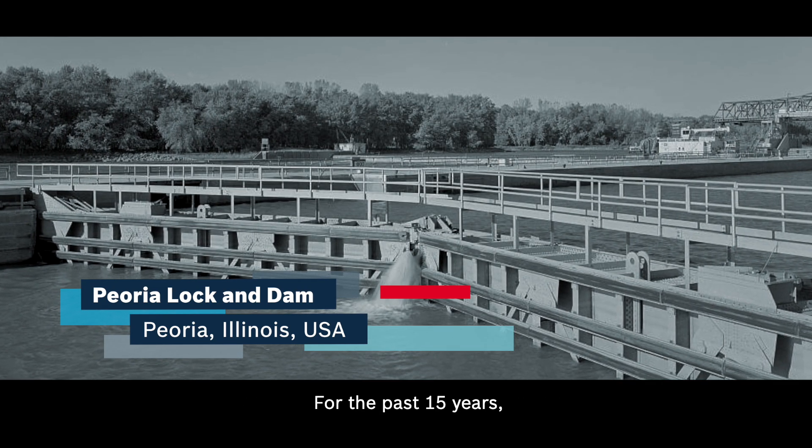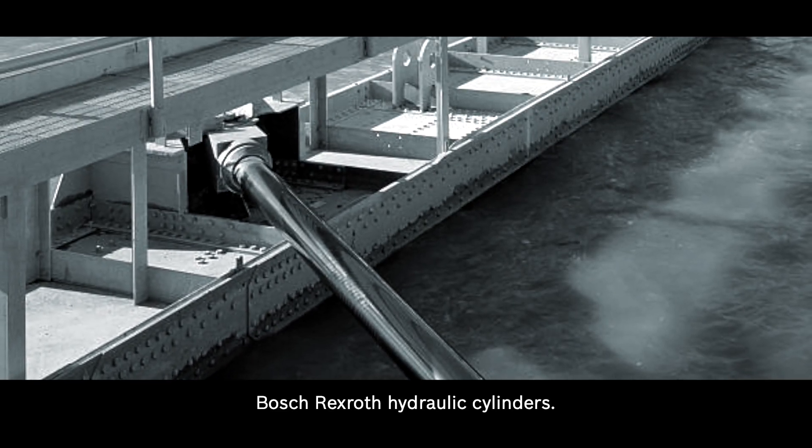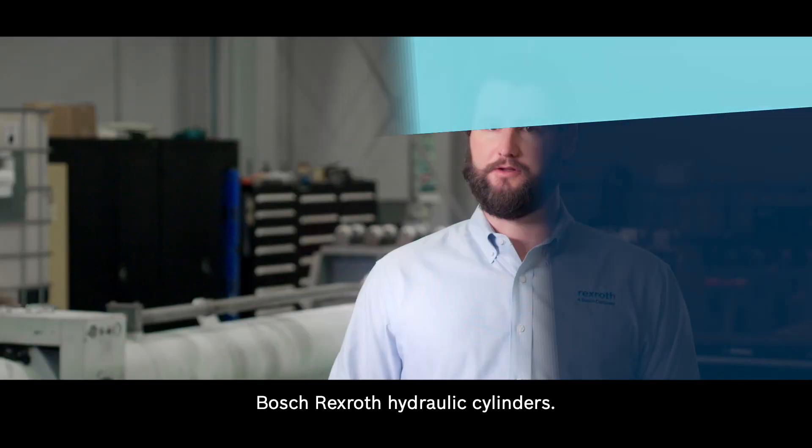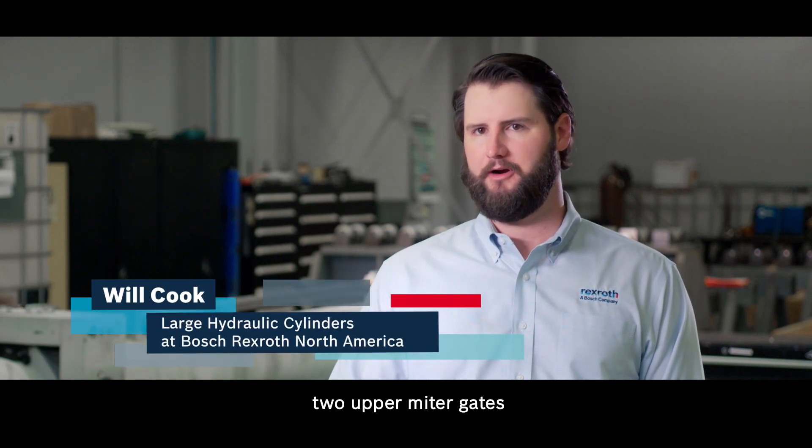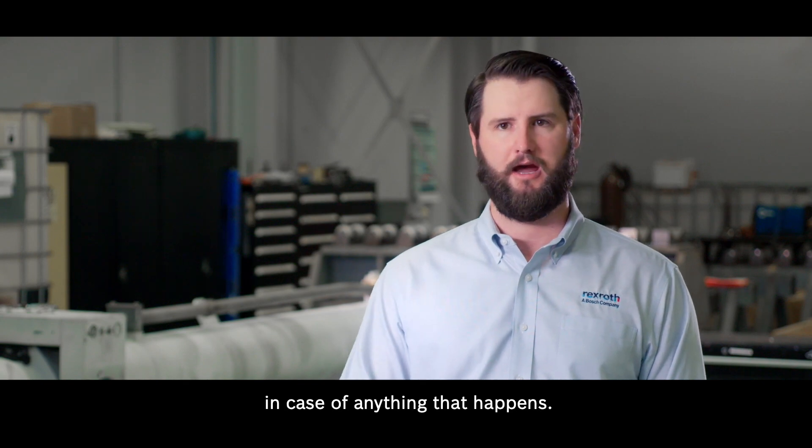For the past 15 years, Peoria miter gates opened and closed with four 30-foot Bosch Rexroth hydraulic cylinders. There's four cylinders installed on the locks, two upper miter gates and two lower miter gates, with a fifth cylinder as a spare in case anything happens.